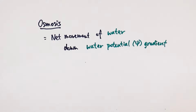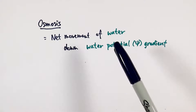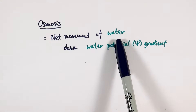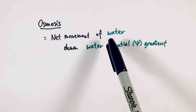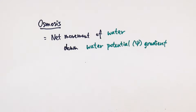In this video, we'll be looking at osmosis. Osmosis is the net movement of water down the water potential gradient. You would probably notice that it has a very similar definition to diffusion, but the difference is that, number one, it's specific to water. Whenever you talk about water movement, it almost has to be osmosis, unless you're talking about water vapor in transpiration, which will be slightly different.